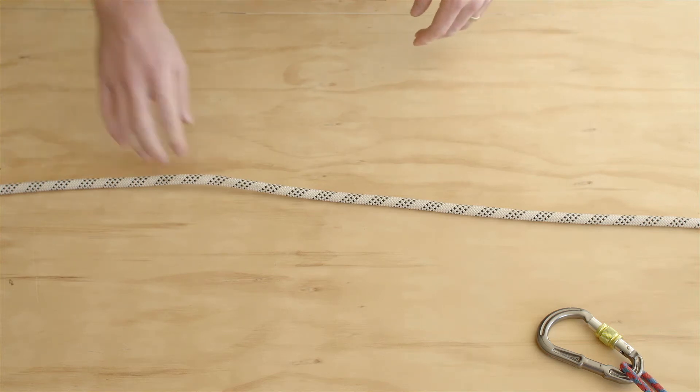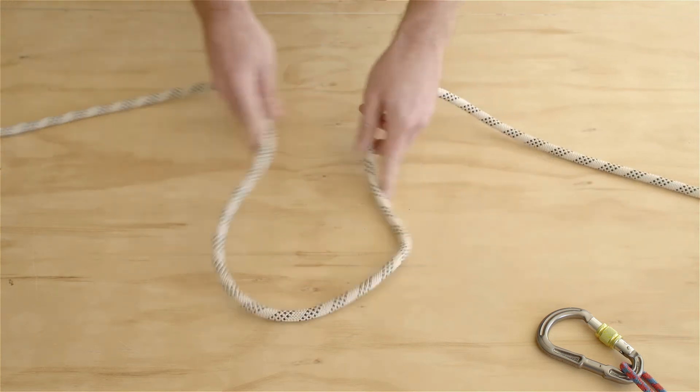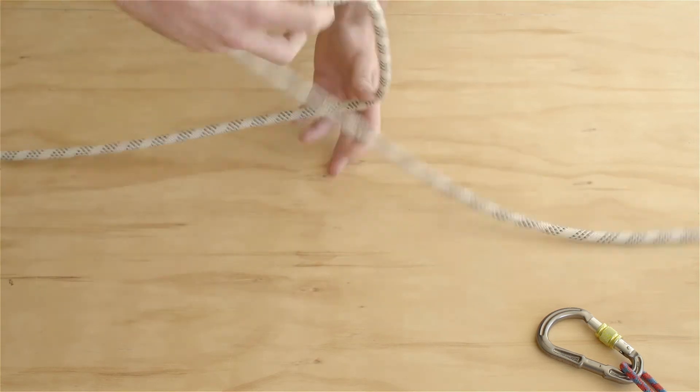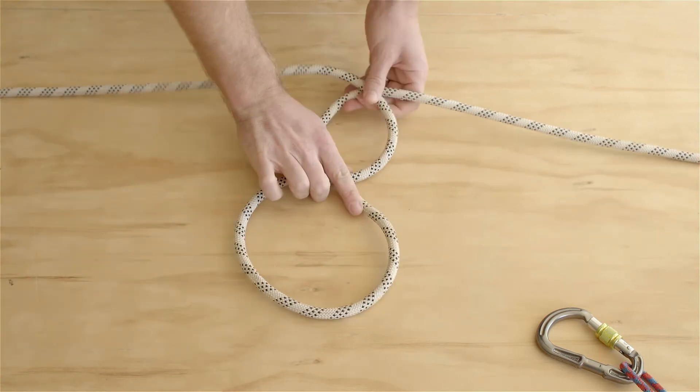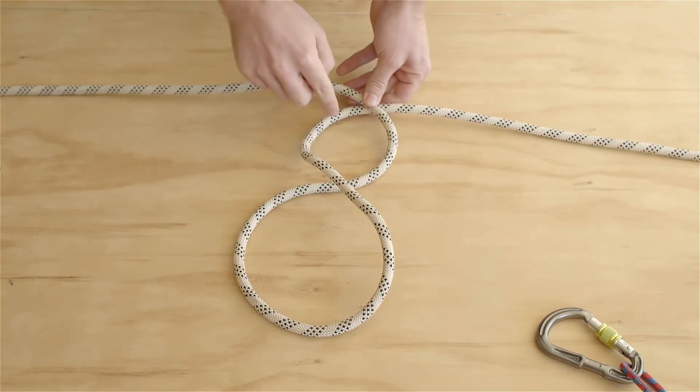To tie the Alpine Butterfly, you grab some slack and you twist once. You twist a second time, so you've got a figure of eight.